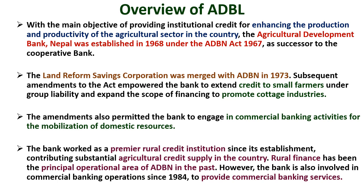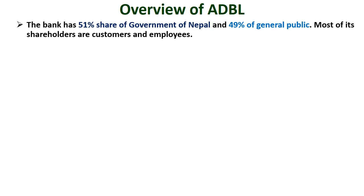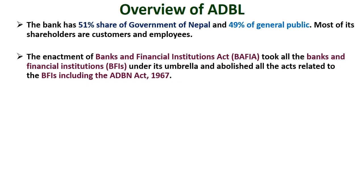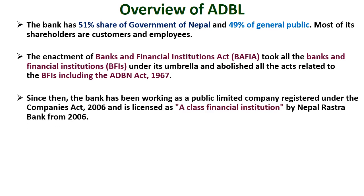Rural finance has been the principal operational area of ADBN. However, the bank has also been involved in commercial banking operations since 1984. The bank has 51% share of the Government of Nepal and 49% of the general public. The enactment of the Bank and Financial Institution Act (BAFIA) abolished all acts related to banks and financial institutions, including the ADBN Act 1967.